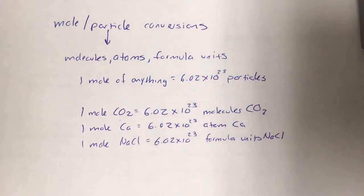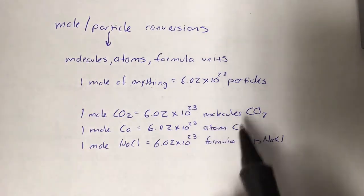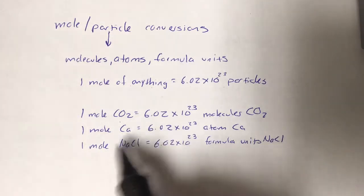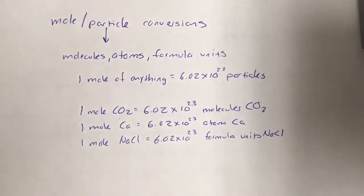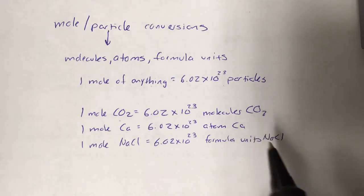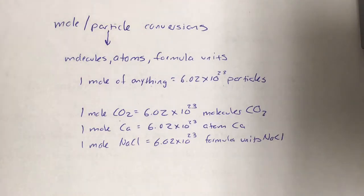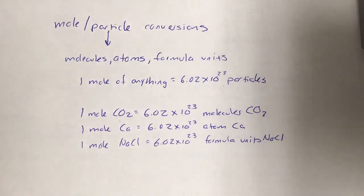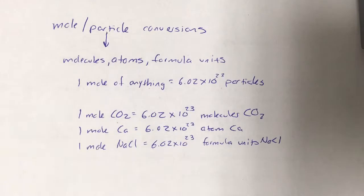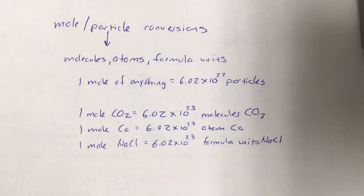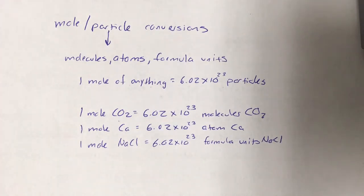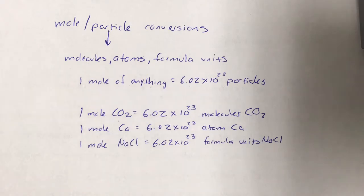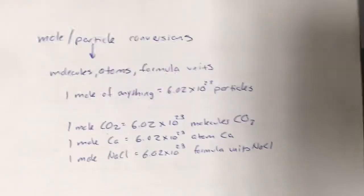Finally, for ionic substances like sodium chloride, they don't have molecules, and figuring out the number of atoms in one of these is not the same kind of conversion — there's more math involved. So we use the term 'formula units.' One mole of sodium chloride is 6.02 times 10 to the 23rd formula units of sodium chloride. You have to recognize that whenever you see molecules, atoms, or formula units, you're doing a mole-particle conversion.